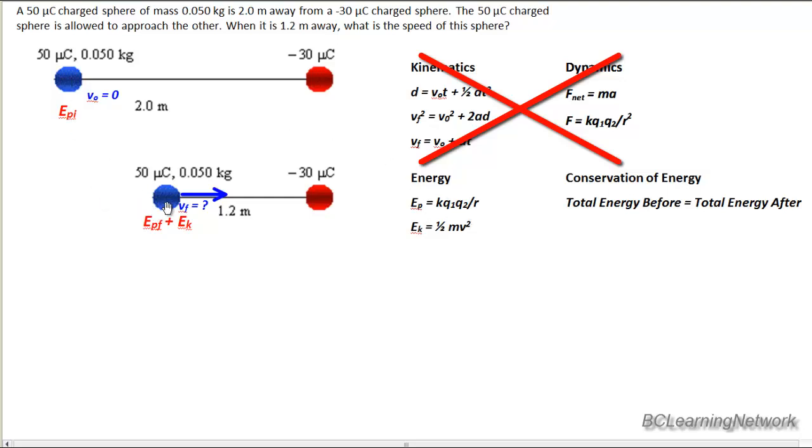And at the end, after I've let it go, it starts to pick up speed, so it gains kinetic energy. And because the distance has changed, because r has changed, it's got a different final potential energy. So initially, I've just got potential, and at the end, I've got potential and kinetic.